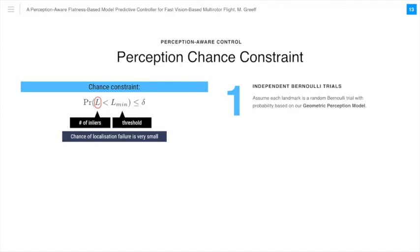In the theory of probability and statistics, a Bernoulli trial is a random experiment with exactly two possible outcomes, success and failure, in which we have some probability of success. We assume that each landmark is a random independent Bernoulli trial where the probability of being an inlier, or a success, is based on our geometric perception model. Then the expected number of inliers is simply the sum of these probabilities, where p_i is the probability that landmark i is a localization inlier, and N is the total number of landmarks at our closest vertex in the teach. In general, in our system, this is on the order of 500 landmarks. The variance is also given by the sum of the variances for each independent Bernoulli trial, which can be written in this way.